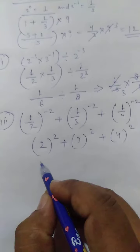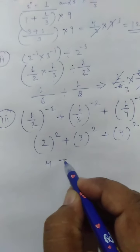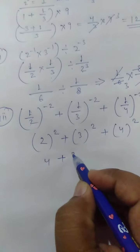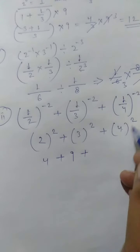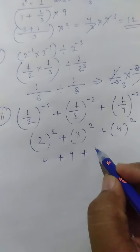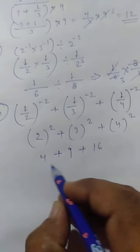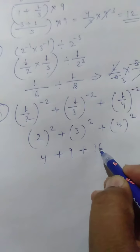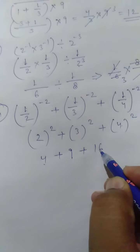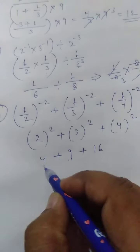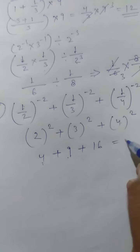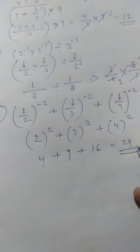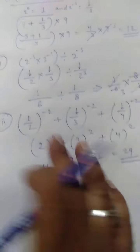Then 2 times 2 is 4, plus 3 times 3 is 9, and 4 times 4 is 16. So we have 4 plus 9 plus 16. That gives us 9 and 16 equal to 25, and 25 plus 4 equals 29. So 29 is the answer of this question.